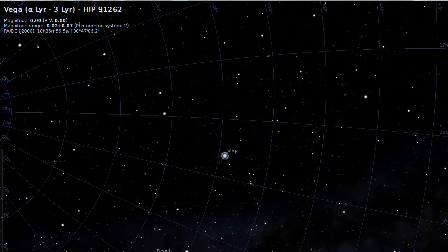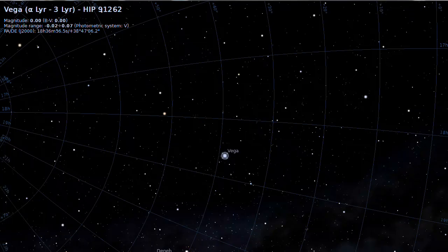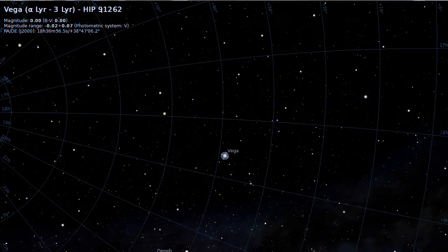The star Vega, for example, has a declination of plus 38.8 degrees. The southern star Achernar has a declination of about minus 57 degrees.